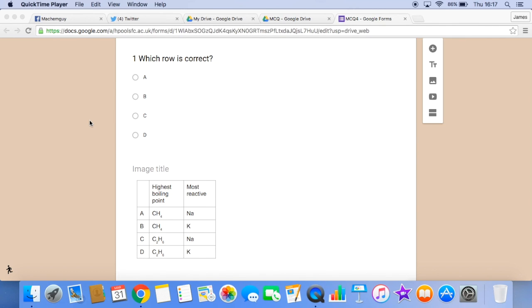Out of the table, A, B, C, D, which row is correct?